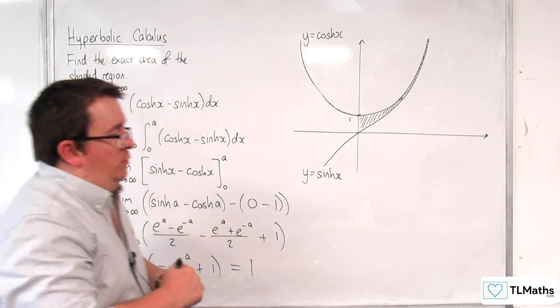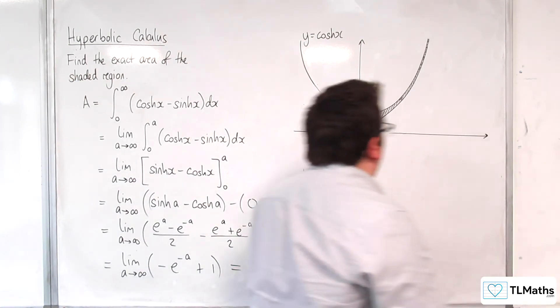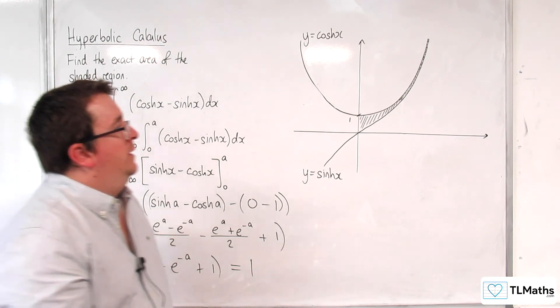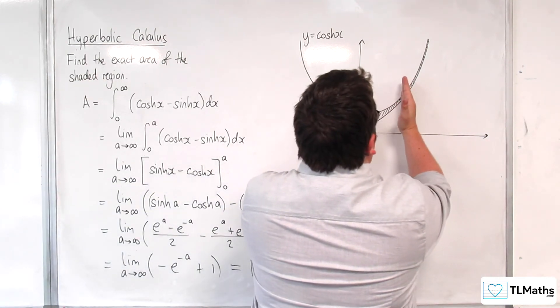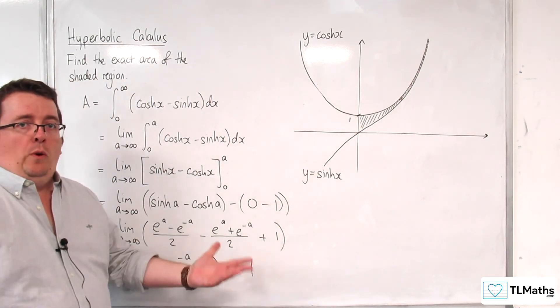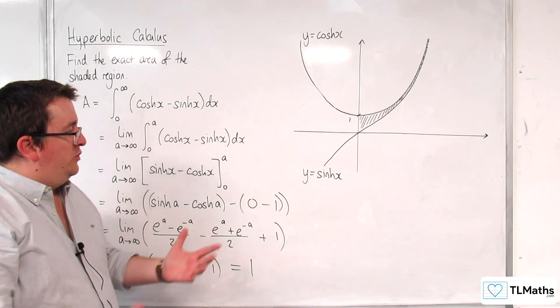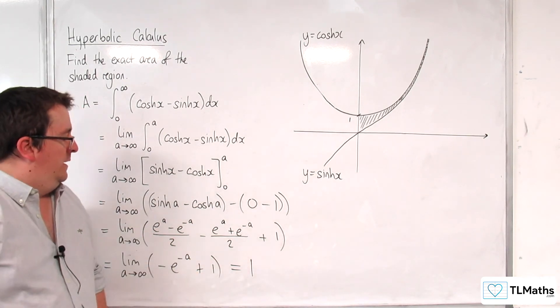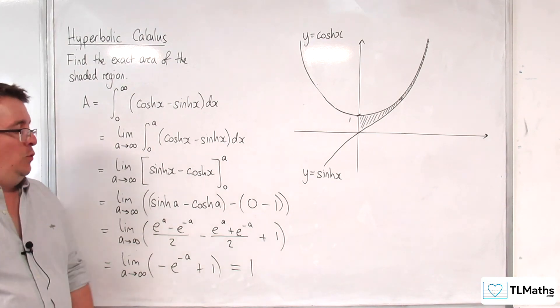So the integral, the area rather, between 0 and log 5 was 4 fifths. So that bit was 4 fifths, which means the rest of it, all the way to infinity, was 1 fifth. It was just 1 fifth more, adding it all together. And so that is equal to 1.